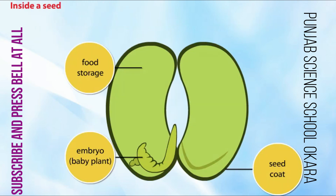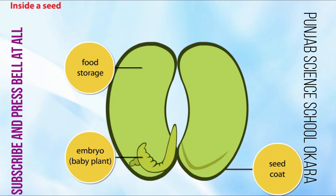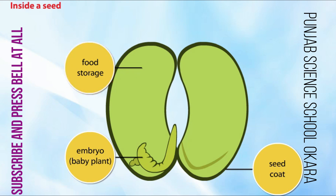Let's look at the parts of a seed. The seed is covered with a shiny layer called the seed coat. The biggest part of the seed is the food storage, which is needed for the embryo, or baby plant, to grow.